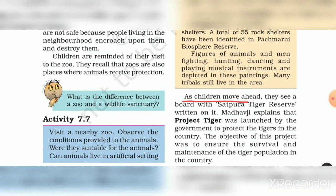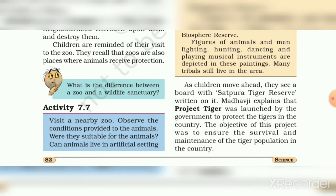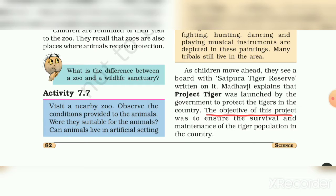As the children move ahead, they see a board with 'Satpura Tiger Reserve' written on it. Madhav ji explained that Project Tiger was launched by the government to protect tigers in the country. The objective of this project was to ensure the survival and maintenance of the tiger population in the country.